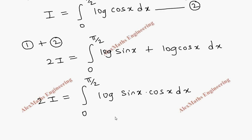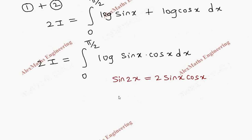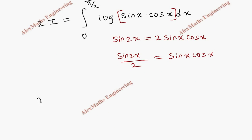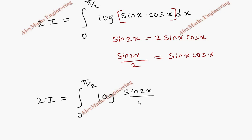Now we have the basic formula sin 2x equals 2 sin x cos x, which means sin x cos x equals sin 2x by 2. So we replace sin x cos x with sin 2x by 2. Therefore 2I equals integral 0 to pi by 2 of log(sin 2x by 2) dx.